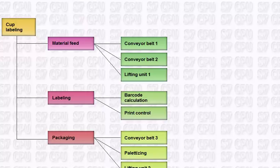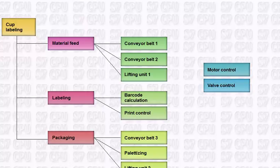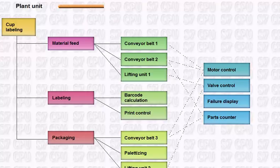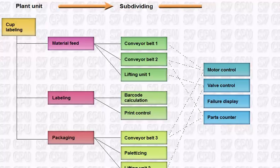If functional units can be identified which can be used jointly by several technological units, this is referred to as a structured approach. In this example, this could, amongst many others, be a motor control, valve control, failure display or part load count. This form of structuring is the basis for simple solutions to complex tasks.